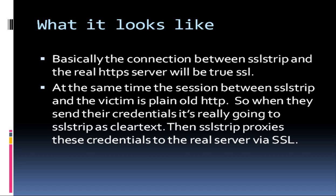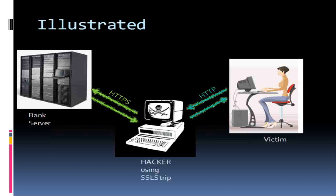SSL strip rips those credentials off and sends them right over to Ettercap or whatever you happen to have listening. Then SSL strip proxies those credentials that the client sends over to the real server they think they're connecting to, and forms a real SSL session on that side. You can see on the right here: the victim thinks they're establishing an SSL session with the bank server, but in actuality they're establishing an HTTP session with SSL strip. SSL strip then forges a fake certificate based on what it proxied and got from the bank, and sends that certificate to the victim. The victim knows no better because the certificate looks valid.